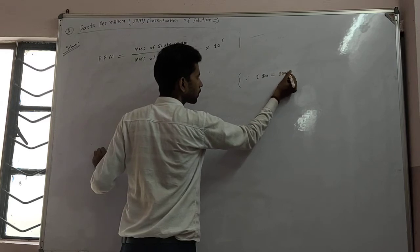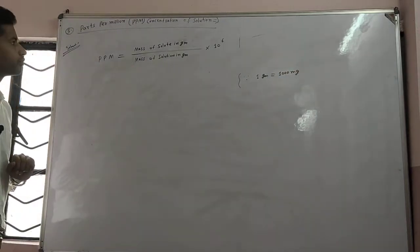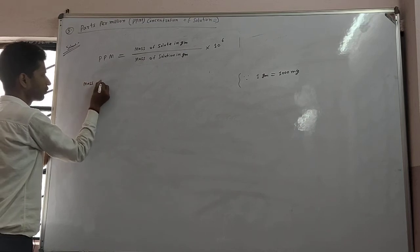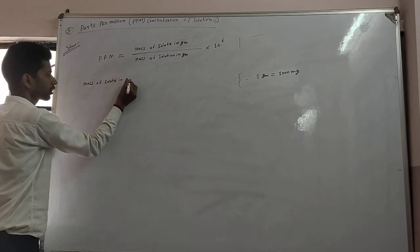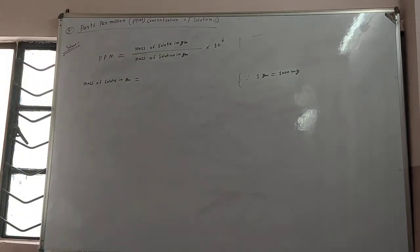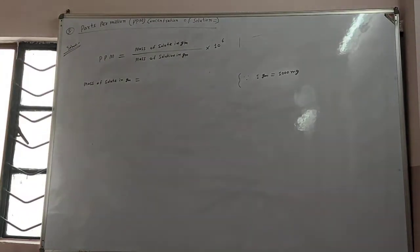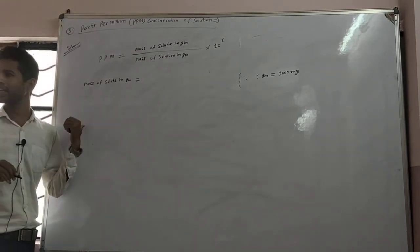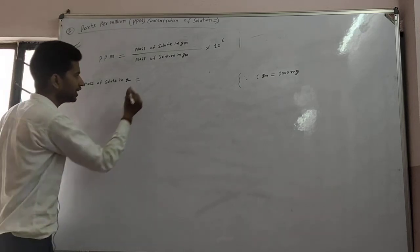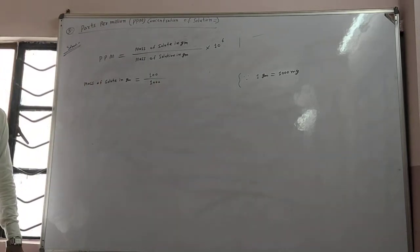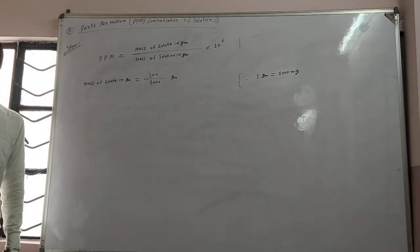1 gram is equal to 1000 milligram. So for mass of solute in gram, we have 100 milligram, which we convert to grams as 100 upon 1000 grams. We need to change the unit in that formula.